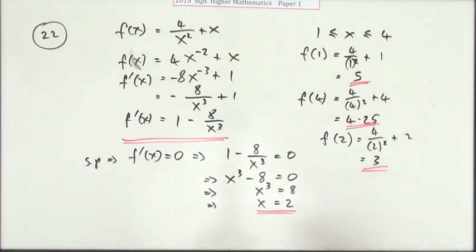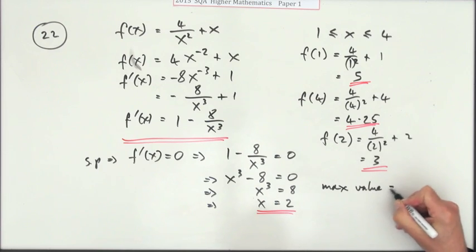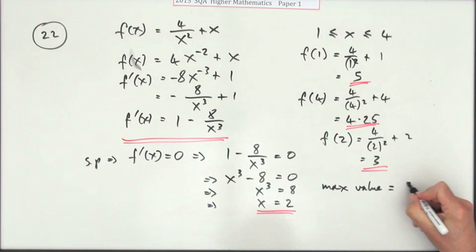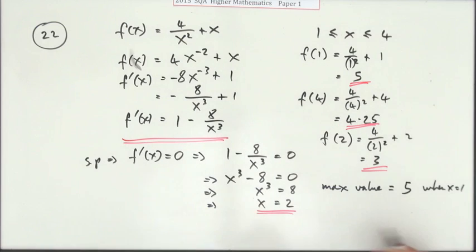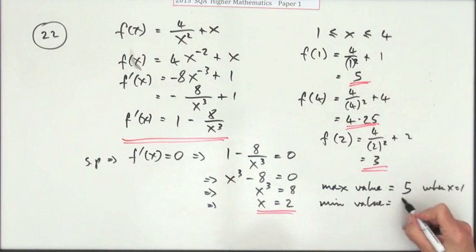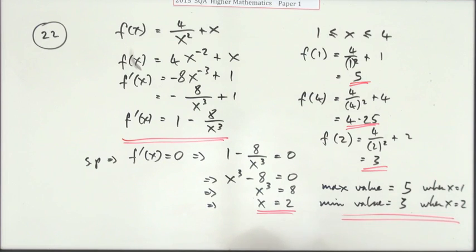So now I can see the maximum value is 5, and that was when x is 1, and the minimum value is 3 when x equals 2. That's all that you need to do - don't need any nature tables.